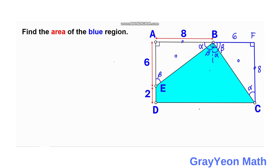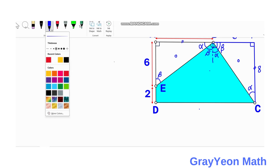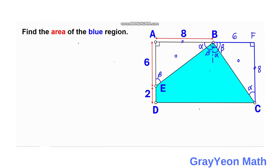For the final step of Method 1, since we established that we get the area of rectangle AFCD and subtract the areas of the two white regions, we write: Area of blue = Area of AFCD minus Area of triangle ABE minus Area of triangle BFC.